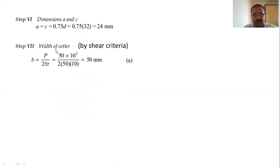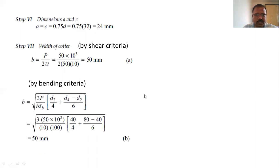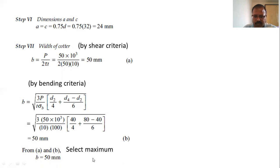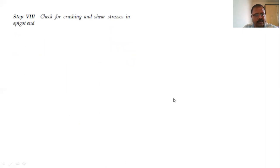Calculate the width of the cotter using two criteria. Using the shear criterion we get one value, and using the bending stress criterion we get another value. We select the larger of the two. In this case both come out equal at 50 mm, so the mean width of the cotter is 50 mm. If they differ, we must select the maximum value.